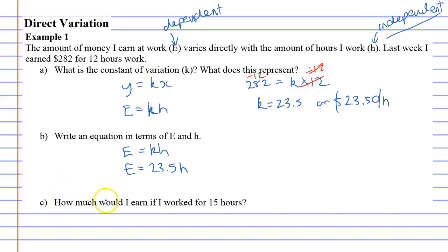Question C, how much would I earn if I worked for 15 hours? So E equals 23.5 times 15 hours. Let's see what we get. It comes out to $352.50.